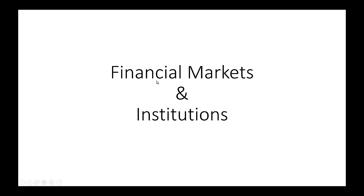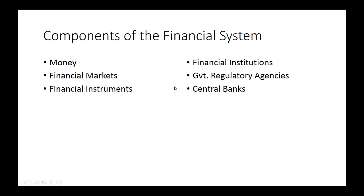As a reminder, there are six components of our financial system. You read this in chapter one: money, financial markets, financial instruments, financial institutions, government regulatory agencies, and central banks. Our objective this semester is to work through all six of those things.